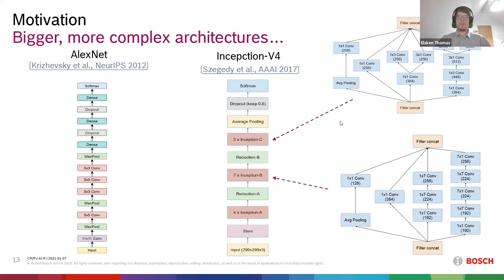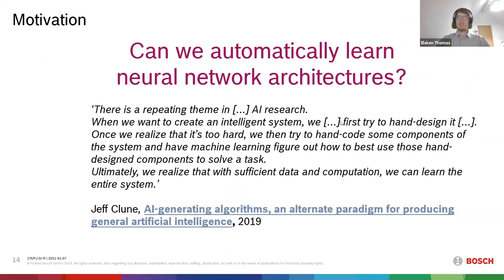A lot of researchers spend significant time manually designing neural network architectures. While 10 or 20 years ago people spent most of their time designing features for machine learning models, deep learning replaced that by learning features automatically. But now people are designing neural network architectures instead. The reasonable question is: if you can learn features from data, why can't we also learn neural network architectures from data in the same way?